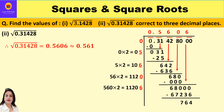Now for the second part: finding the square root of 0.31428 by the long division method. Since we need the answer correct to three decimal places, we require four decimal places, meaning four periods after the decimal point. Forming pairs: whole number part is 0, then the periods are 31, 42, 80 (inserting a zero to complete the pair), and 00 — giving us four decimal periods.